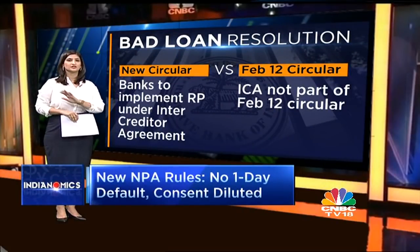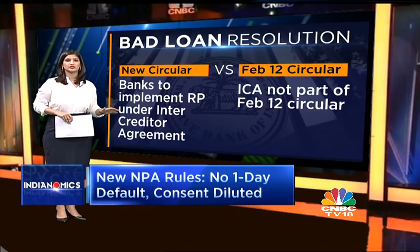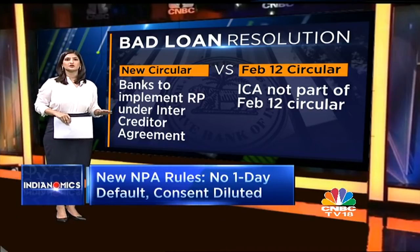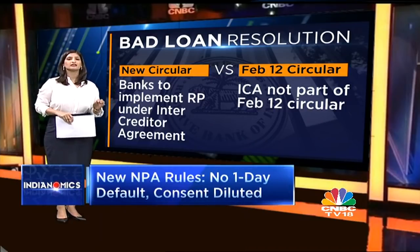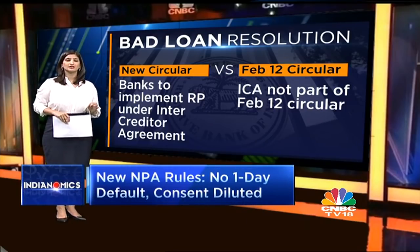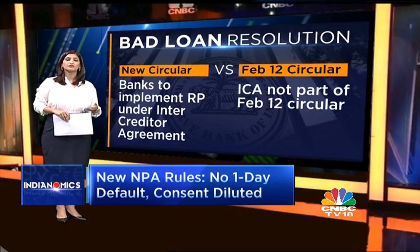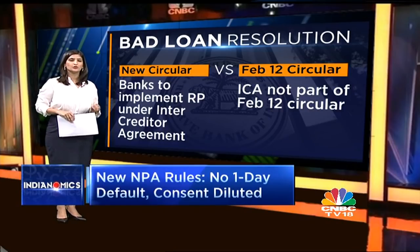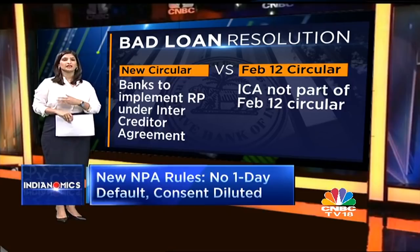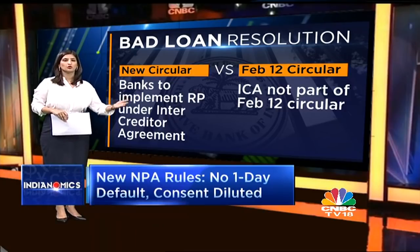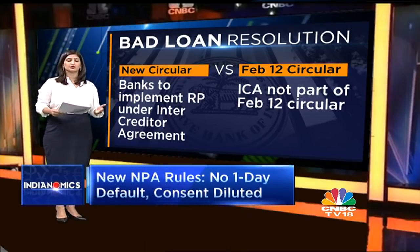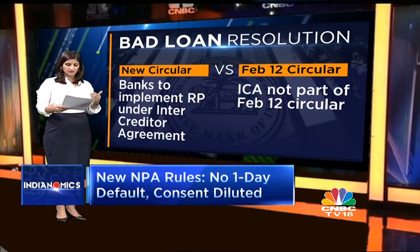The fourth big change is the use of an inter-creditor agreement to pass a resolution plan. This did not feature in the February 12 circular, but now all resolution plans must be passed under the inter-creditor agreement, which also makes way for dissenting creditors to get at least the liquidation value if they choose not to go with the largely approved plan.